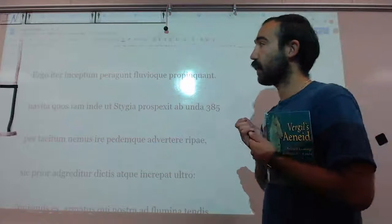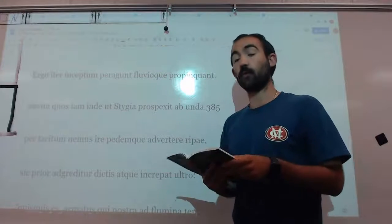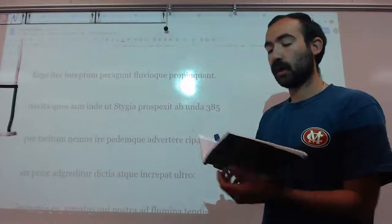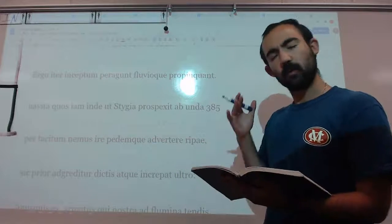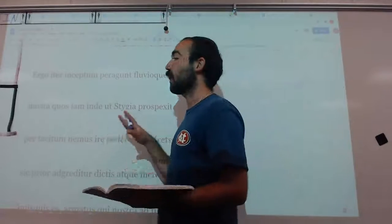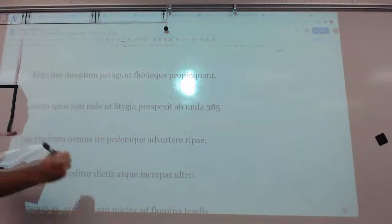We're going today to go over lines 384 to 425, so it's going to be a little bit longer of a video. It's about 40 lines worth, so it's quite a while, but we're going to manage regardless. Aeneas is going to be meeting Charon and Cerberus today, so it's a big moment for him as he's going through everything.